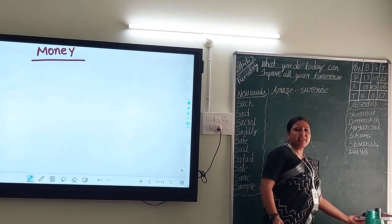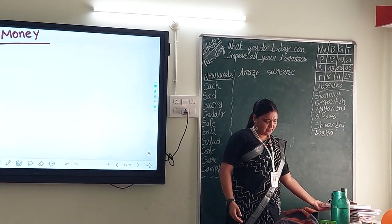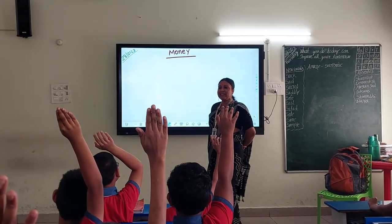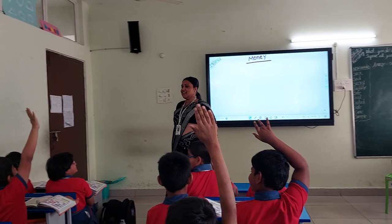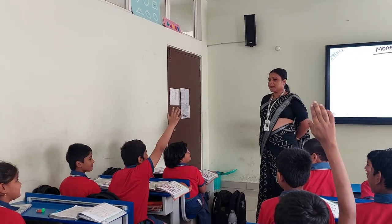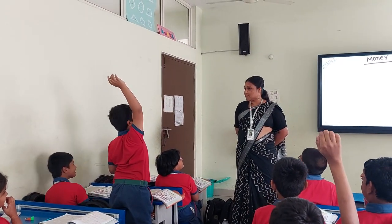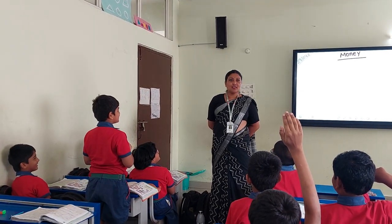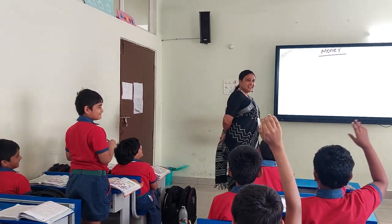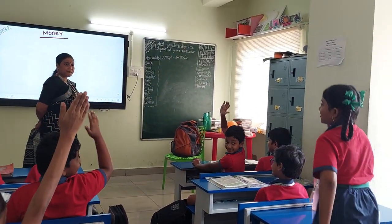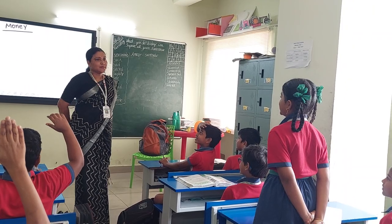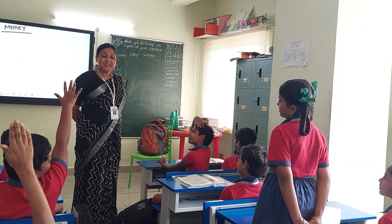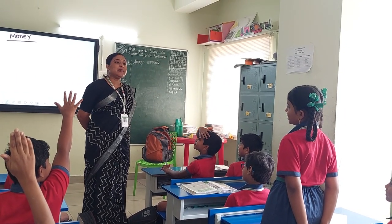You know, yesterday — how many of you went to the market? Did anyone purchase anything? Yes. What did you purchase, Kunal? Vegetables. So how did you purchase that? With money. And Meeta? Fruits. Which fruits did you purchase? Bananas. So how did you purchase that?